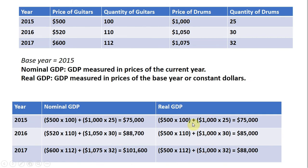Moving on to the last column: real GDP. We're going to take the base year price and multiply that by the output in the year we're looking at. In 2015, the base year price for guitars is $500 — by definition, that is the base year in this example. So we already did this calculation, and it should be no surprise that real GDP and nominal GDP will be the same in the base year. That will always be the case.